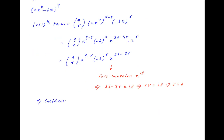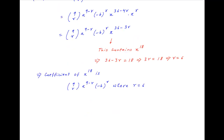Therefore, using the above result, the coefficient of x raised to the power 18 in the binomial expansion of the given expression is equal to 9 choose r, multiplied by a raised to the power 9 minus r, multiplied by minus b raised to the power r, where r equals 6. This is equal to 9 choose 6, multiplied by a raised to the power 3, multiplied by minus b raised to the power 6.